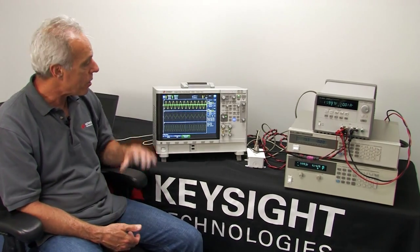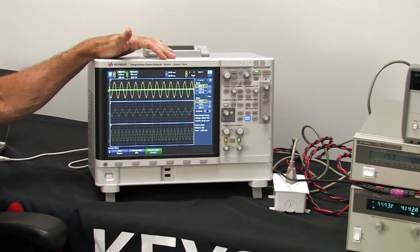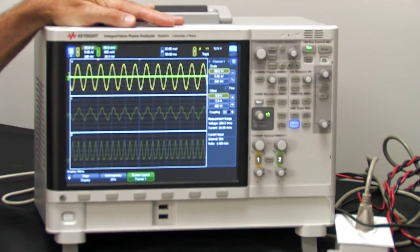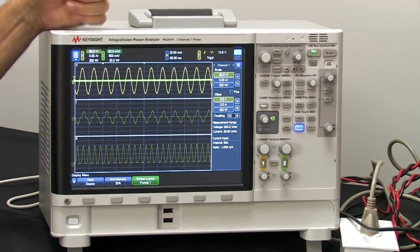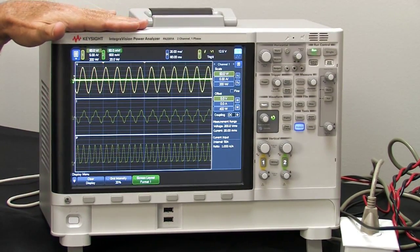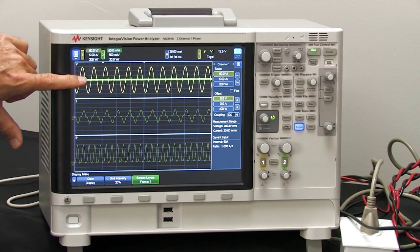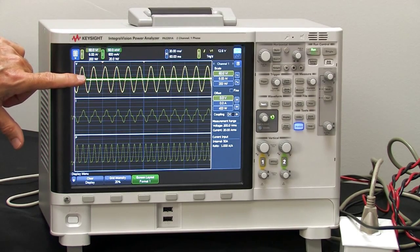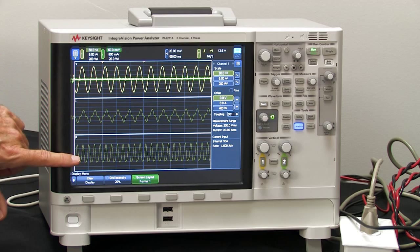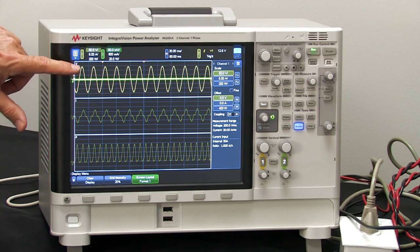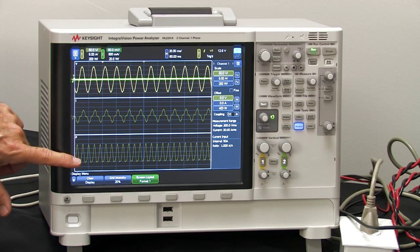We'll be doing those measurements with the power analyzer. Now, this PA2201A is a two-channel analyzer. Each channel has voltage input and current inputs, and it calculates the power from the voltage and current inputs. The top part of the screen here is showing the voltage waveforms, the middle part is showing the current, and the bottom is showing the power. The yellow is the AC input voltage, the AC input current, and the AC input power.